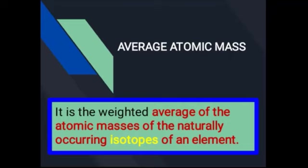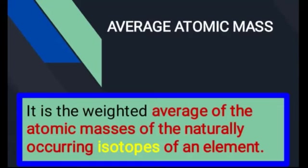اس definition کو سمجھنے کی کوشش کی جائے تو ہم یہ دیکھتے ہیں کہ یہاں isotopes کی بات ہو رہی ہے — کہ isotopes کا جو average atomic mass ہوگا کسی بھی element کا، وہ average atomic mass ہمیں دیتا ہے۔ یہاں غور کرنے کی ضرورت ہے کہ what is meant by naturally occurring isotopes of elements.